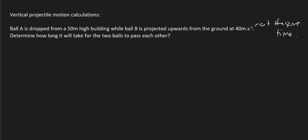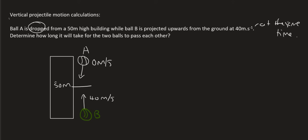Okay, so we've got this building and we're going to have ball A which is dropped. Now the word dropped implies that it doesn't have an initial velocity or its initial velocity is zero. So this is going to be ball A. It's a 50 meter high building and then ball B is going to be thrown upwards at 40 meters per second. And what we need to try to work out is at what time will the two balls be passing each other.